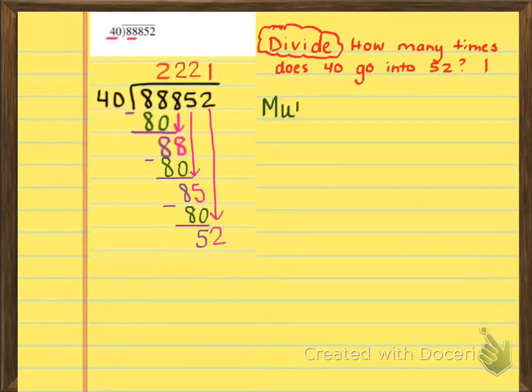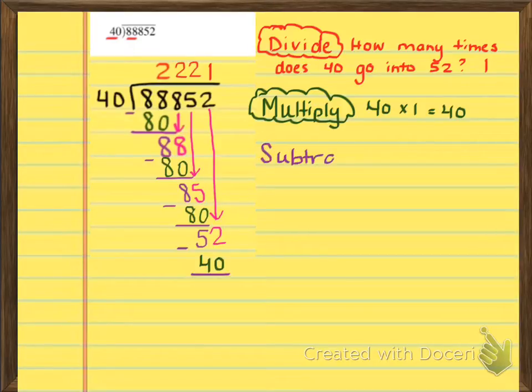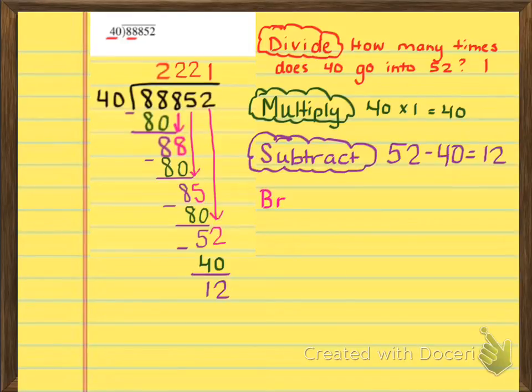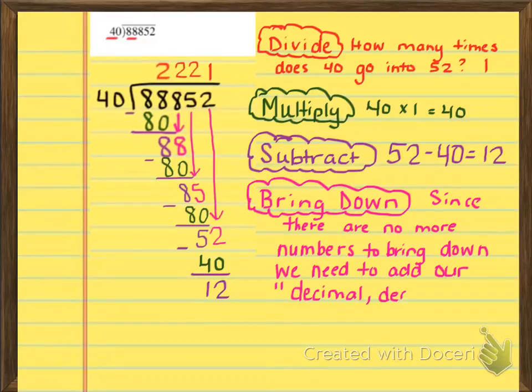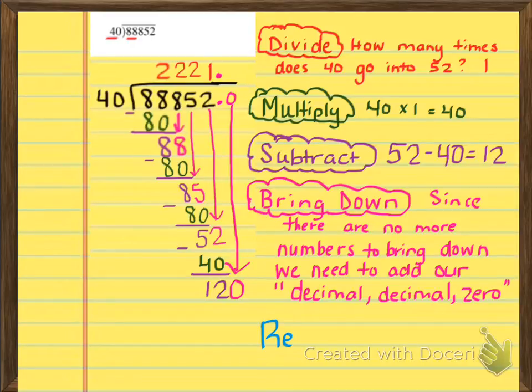So now we're going to go ahead and pick up where we left off again. How many times does 40 go into 52? Well, it really only goes in once. So now we multiply 40 times 1 is 40. We're going to put that right underneath the 52 and subtract it from the 52. So then we're left with 12. And then we have something a little special here. Since we don't have any more numbers to bring down, that's when we're going to need to add our decimal, decimal 0. So I actually say it out loud every time I make the decimal point. I say decimal, decimal, 0. I put a decimal in the quotient. I put a decimal at the end of the dividend to show where I started adding numbers. And then I add the 0 that I'm then going to drop down and then repeat.